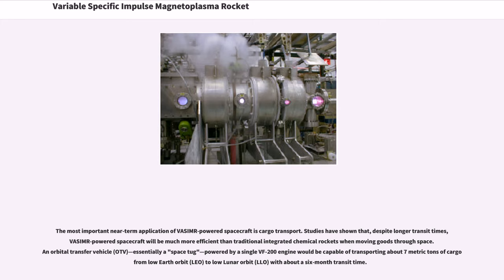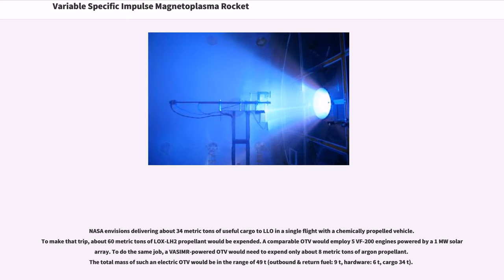Studies have shown that despite longer transit times, VASIMR-powered spacecraft will be much more efficient than traditional integrated chemical rockets when moving goods through space. An orbital transfer vehicle, essentially a space tug powered by a single VF-200 engine, would be capable of transporting about 7 metric tons of cargo from low Earth orbit to low lunar orbit with about a 6-month transit time. NASA envisions delivering about 34 metric tons of useful cargo to LLO in a single flight with a chemically propelled vehicle. To make that trip, about 60 metric tons of LOX/LH2 propellant would be expended. A comparable OTV would employ 5 VF-200 engines powered by a 1 megawatt solar array. To do the same job, a VASIMR-powered OTV would need to expend only about 8 metric tons of argon propellant. The total mass of such an electric OTV would be in the range of 49 tons.